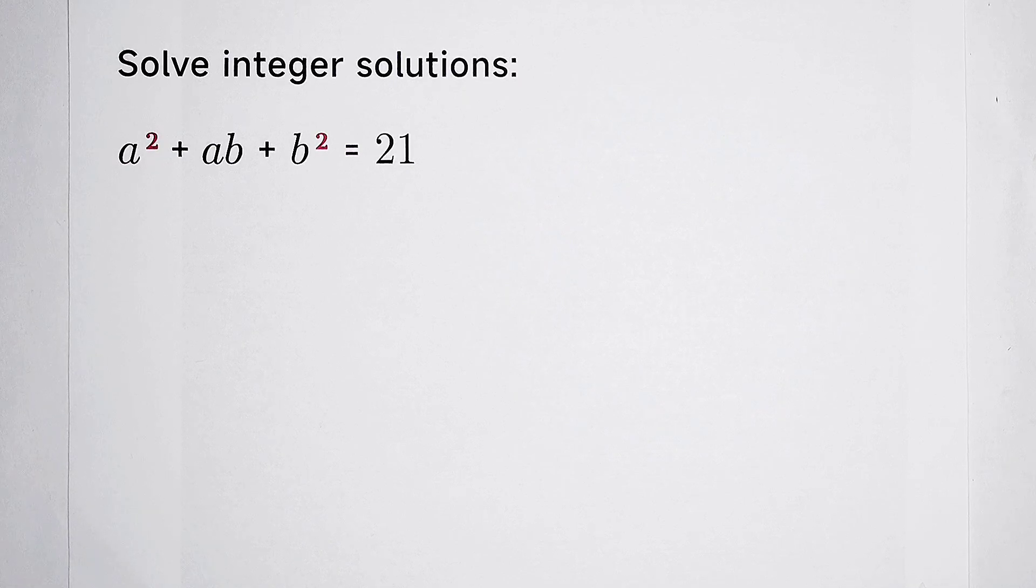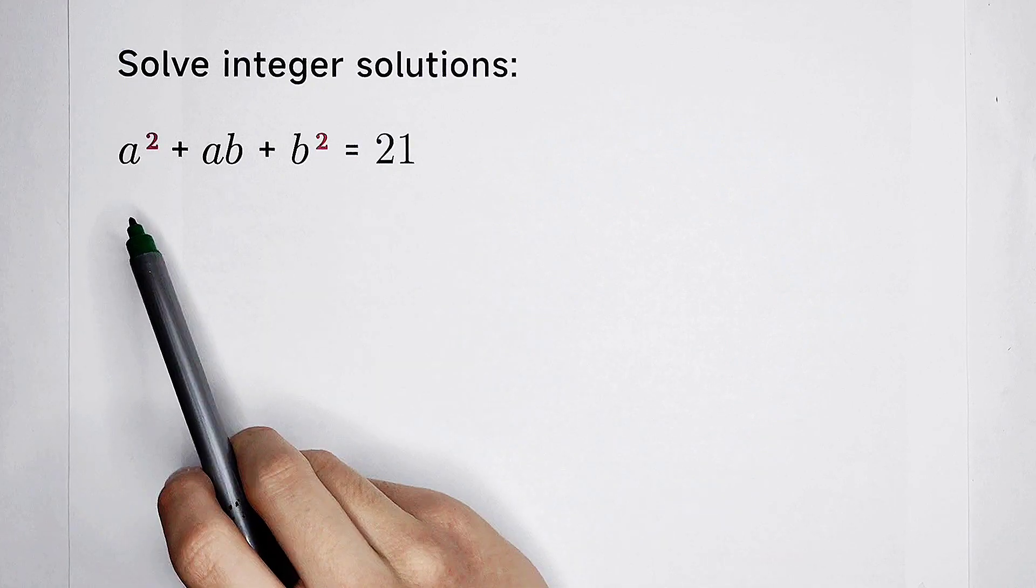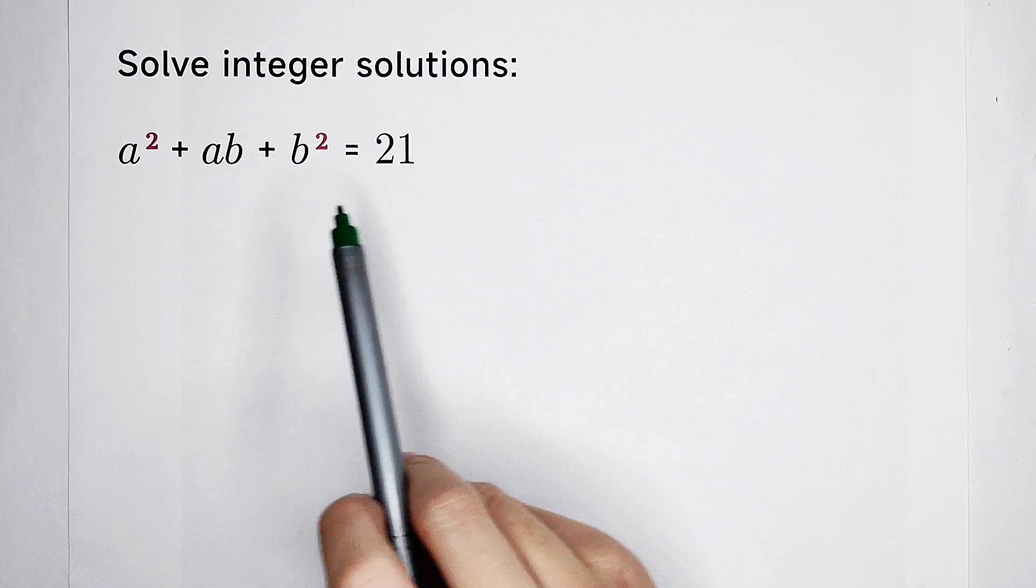Welcome back to Mathwino! Solve the integer solutions of this equation: a squared plus ab plus b squared is equal to 21.